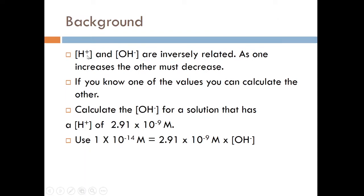So as H+ and OH-, they're related. As one goes up, the other one goes down. So you can think of them as a seesaw. If you have a lot of H+, you're going to have a little bit of OH-. If you have a lot of OH-, you're going to have a little bit of H+. And if you know one of the values, you can calculate the other one very easily. Like in this example problem here, it says calculate the concentration of OH- for a solution that has a concentration of H+ equal to 2.91 times 10 to the negative 9th. Well, you would just plug it into the equation, which we just learned in the previous slide, and say that 1 times 10 to the negative 14th equals 2.91 times 10 to the negative 9th times [OH-], and then solve for OH- by dividing both sides by 2.91 times 10 to the negative 9th.